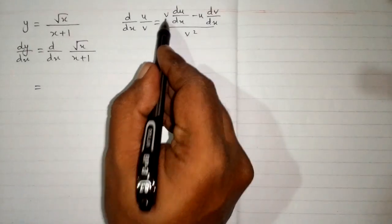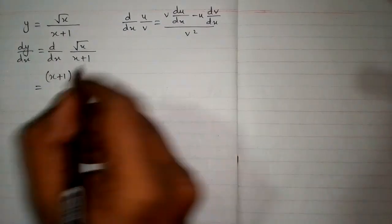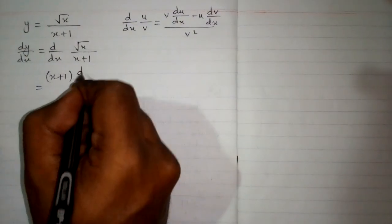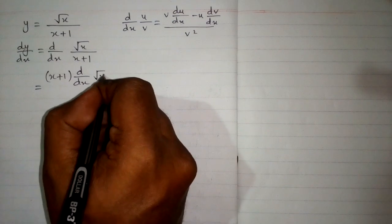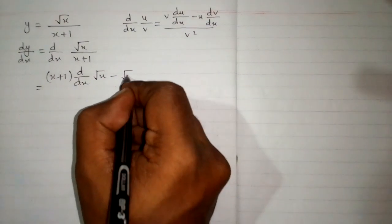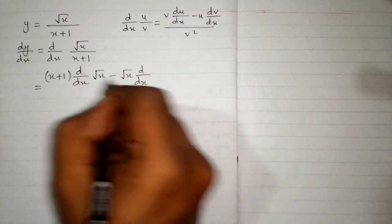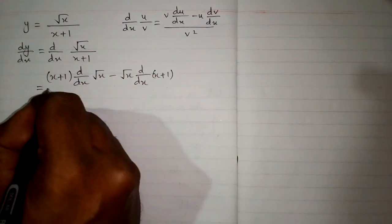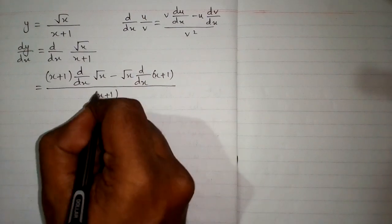So first we will write v, which is x plus 1, and then the derivative of u. We will write d by dx of square root of x minus square root of x multiplied by derivative of v, all upon v square.